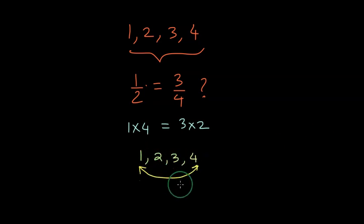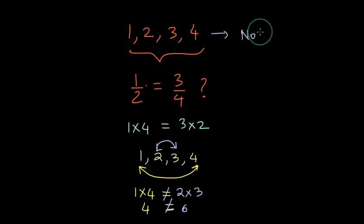We multiply 1 and 4 together, which are the extreme numbers. Then we check if it equals the multiplication of the middle numbers, which are 2 and 3. The multiplication on the left is 4, whereas the multiplication on the right is 6. Since the multiplications are not equal, we can say that 1, 2, 3, 4 are not in proportion.